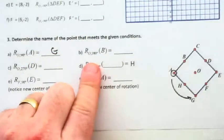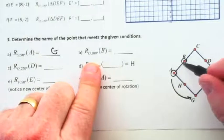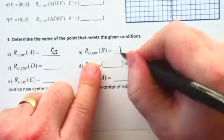If we rotate about O, the point B, 180 degrees. Well, then it would land over here at F.